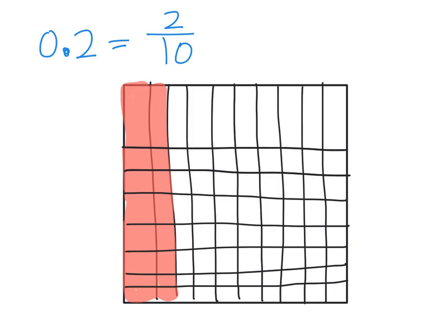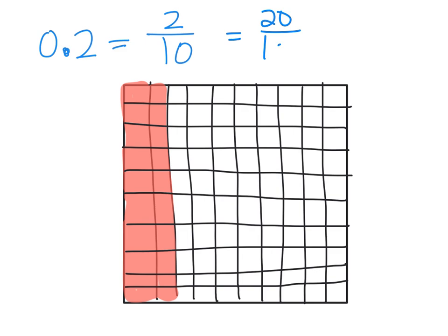I haven't added any more red shading, but instead of seeing two tenths we now see twenty hundredths. So what does that tell us? Two tenths is equal to twenty hundredths, because the same amount of red shading existed in both cases — all I did was cut them into smaller pieces. Two tenths is two big strips, while twenty hundredths is twenty little squares.